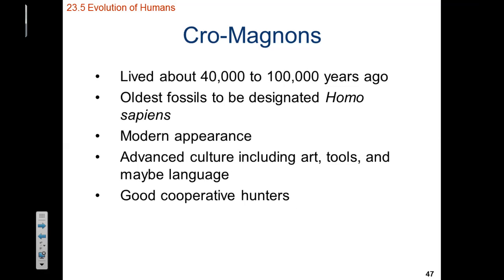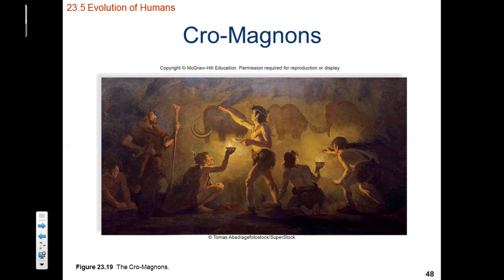Then there are the earliest humans, known as the Cro-Magnons. The Cro-Magnons lived between 40,000 and 100,000 years ago and are believed to be the earliest Homo sapiens. They had a very modern skeletal appearance and an advanced culture that included art, tools, and language. It is also believed that these were very cooperative hunters, evidenced by their cave paintings that are still present in modern-day Europe.